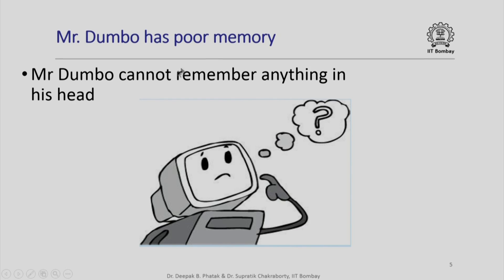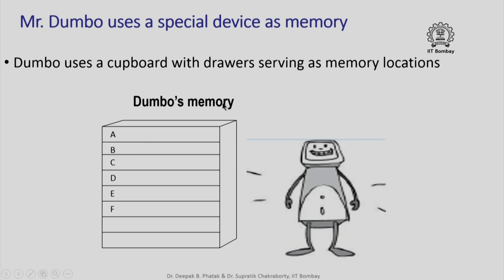First and foremost, Mr. Dumbo has poor memory. So even if we give him a number, Mr. Dumbo cannot remember that number in his head. He is perpetually confused; he does not carry any information inside his head. He is capable of doing things which he sees and capable of executing instructions which we give, but the poor fellow cannot remember anything at all in his head. Now, Dumbo has to store numbers that we give him and also the numbers which he calculates. So he will need some device to work as memory.